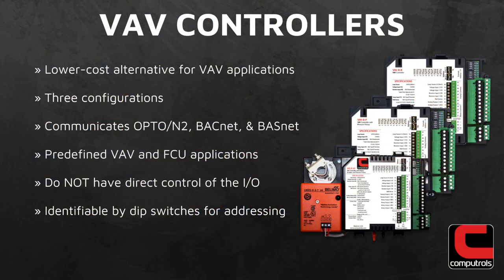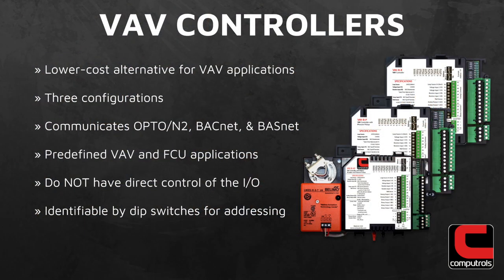The VAV-B is our lower cost alternative to our standard VAV applications. It's also available in three configurations depending on your need for an actuator or pressure pickup. Its primary communication protocol is Optomux, although BACnet and BACnet are also available. It's easily identifiable by the dip switches used to set the address.